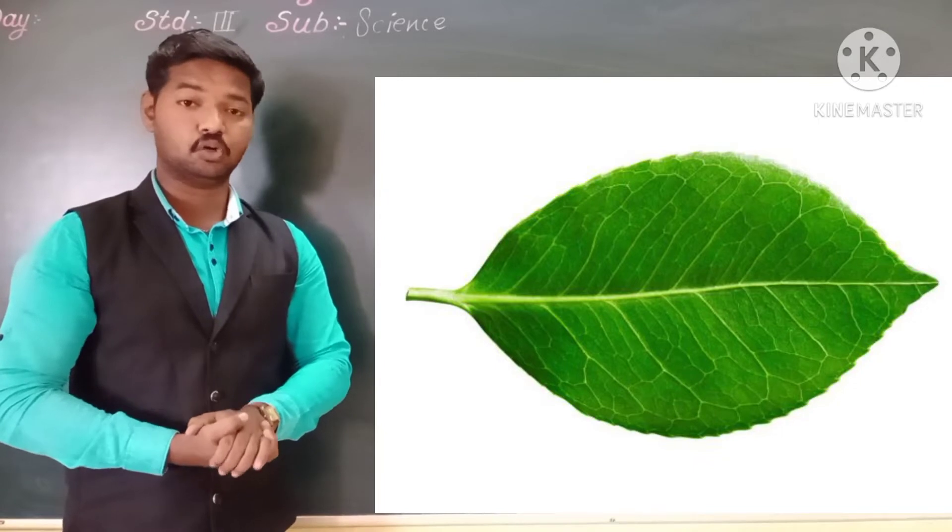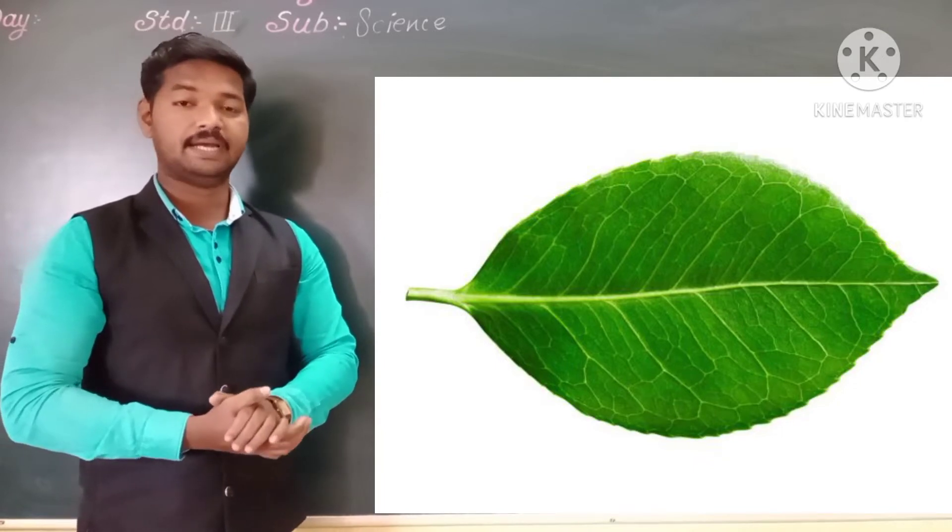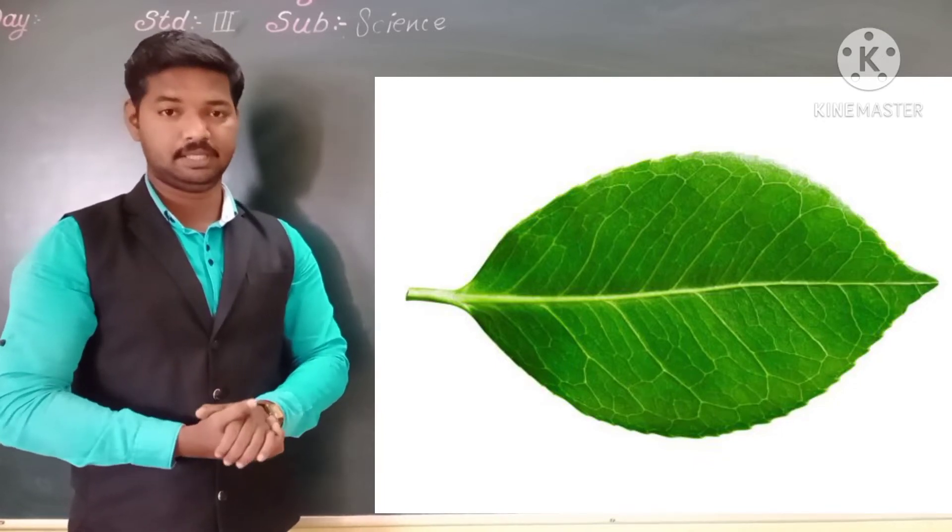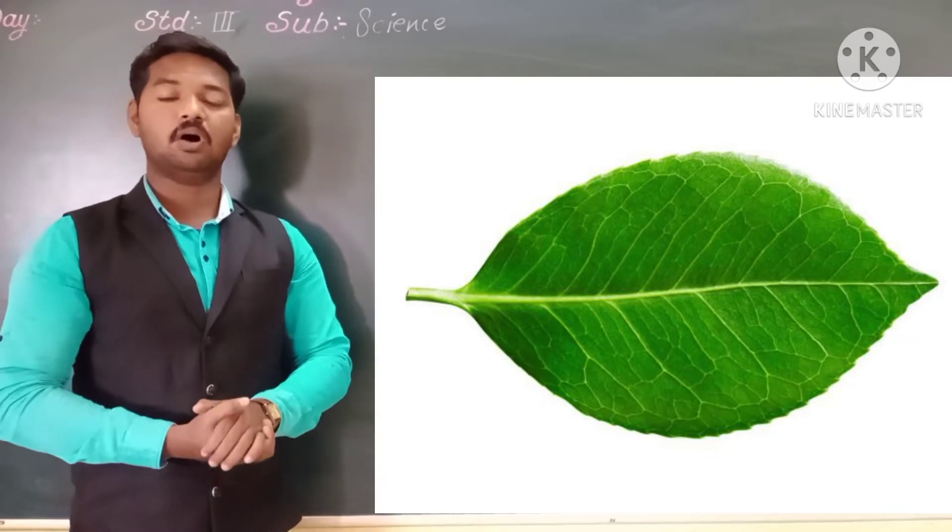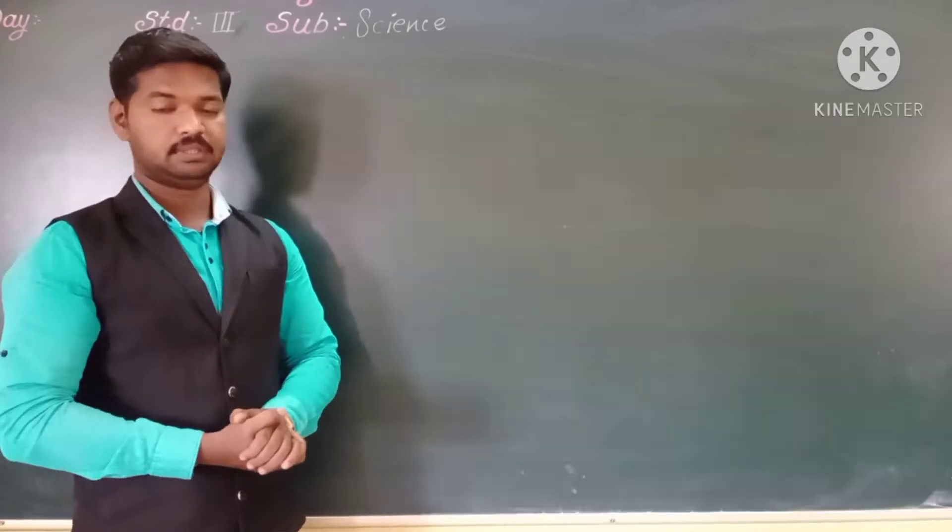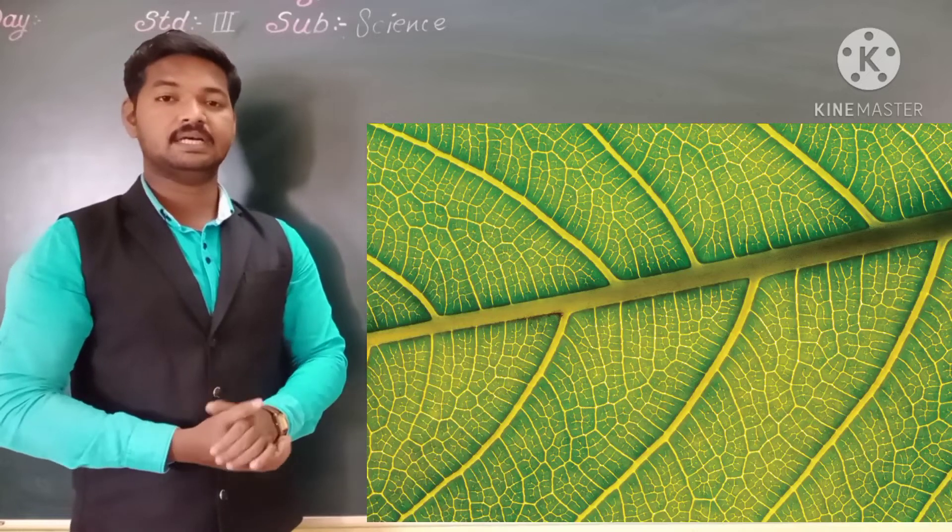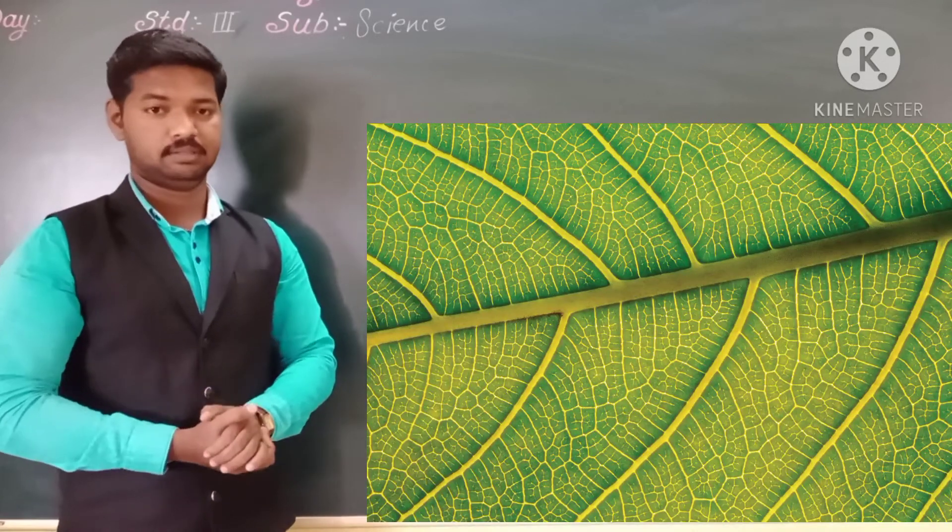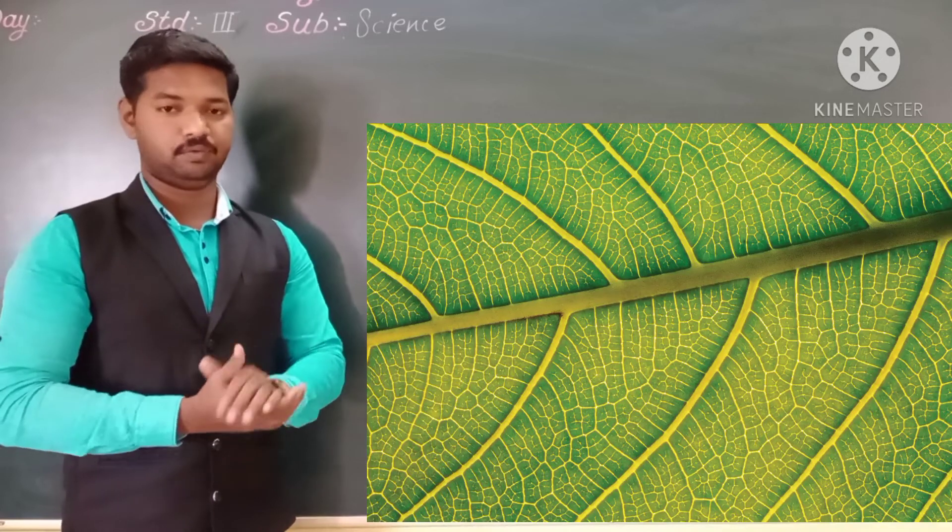Observe the leaf closely. The broad and flat surface of the leaf is known as leaf plate or lamina. Each leaf has a tube in the middle. This tube is known as main vein.